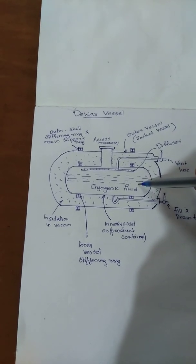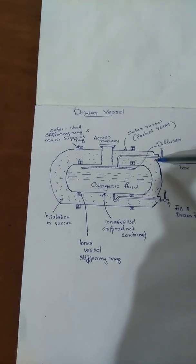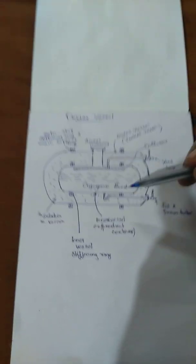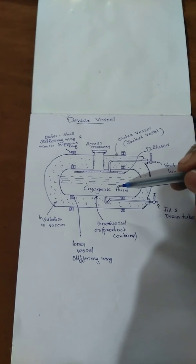The inner vessel is used for storing the cryogenic fluid and the outer vessel acts as a barrier between the outside atmosphere and the cryogenic fluid.